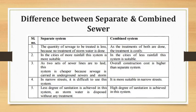In narrow streets, the separate system is difficult to use, while the combined system is more suitable in narrow streets. Regarding degree of sanitation, the separate system achieves a lesser degree of sanitation because stormwater is disposed of without any treatment, whereas the combined system achieves a higher degree of sanitation.